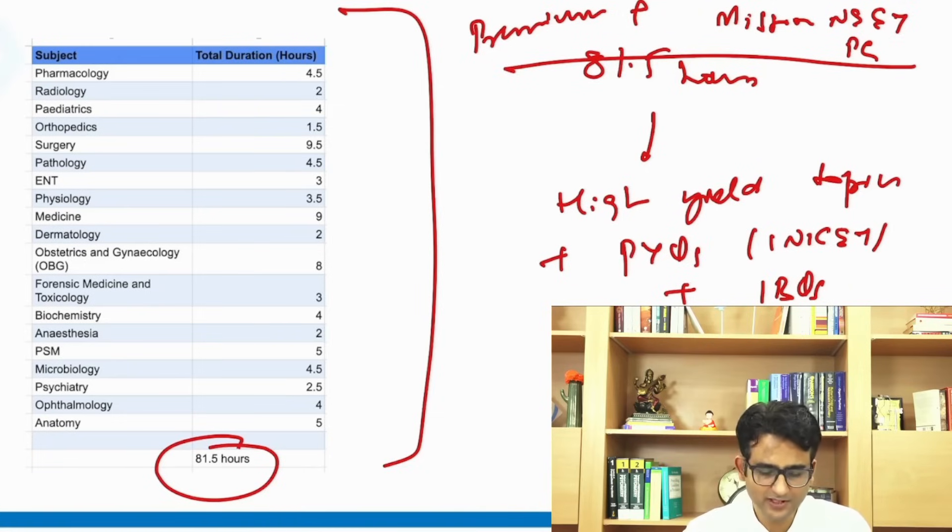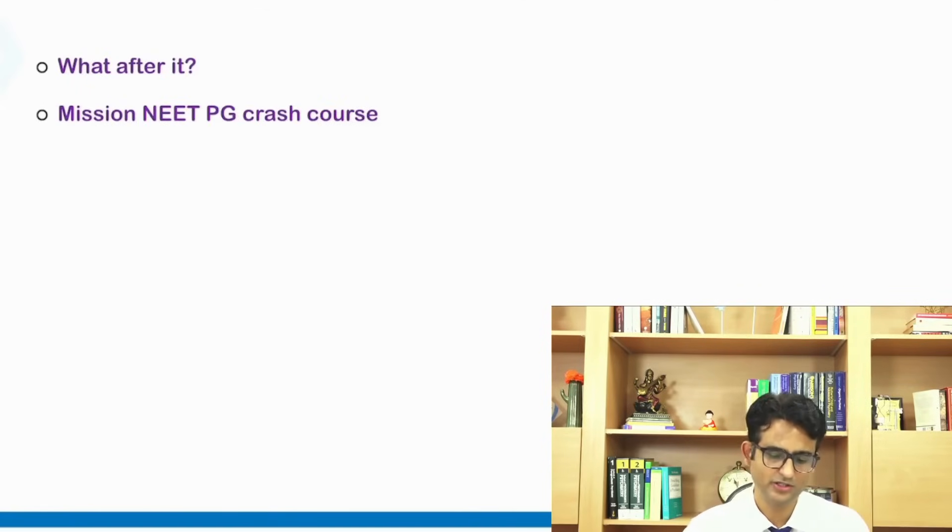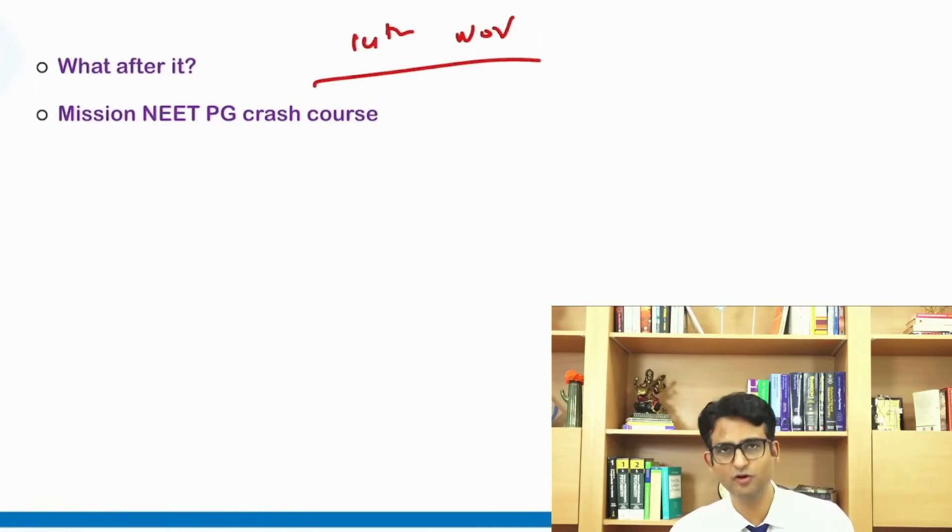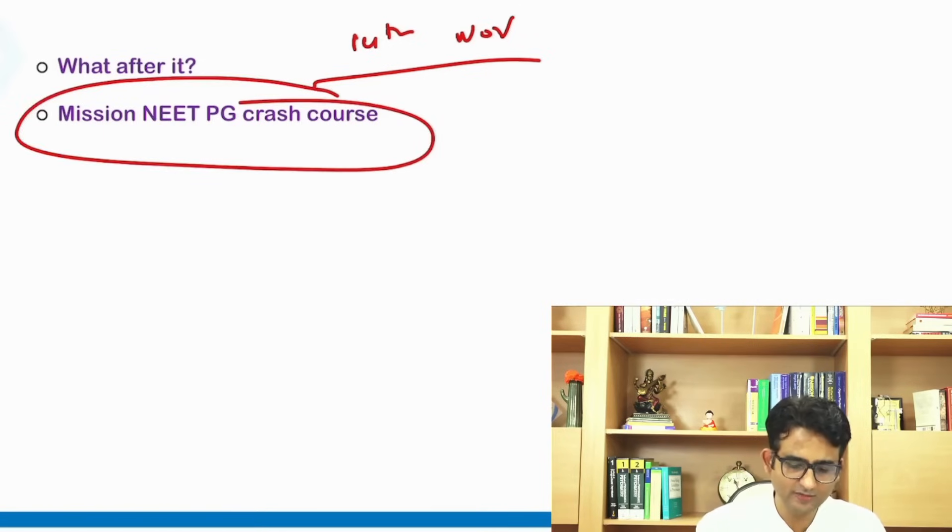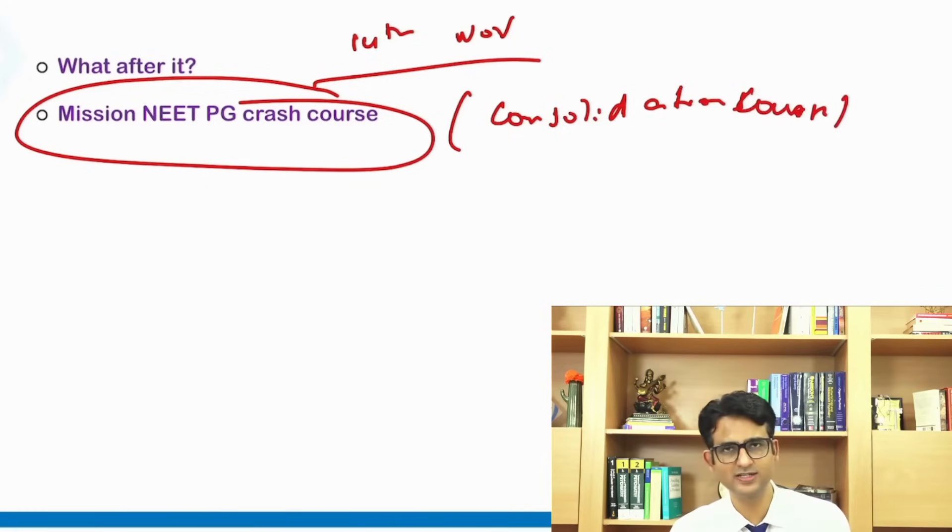After our Marathon INI CET is done, then we will go with the next phase of the preparation which is going to start from 14th of November. Students who have been following Cerebellum Academy know that when we started Mission NEET PG lectures, live lectures, we said that we will complete the course and then go to the consolidation phase or the revision phase. So we are going to be starting with the revision phase, or you can call it consolidation phase or you can also call it crash course. Why we can call it a crash course? Because the way we have designed this course is that it is complete in itself.